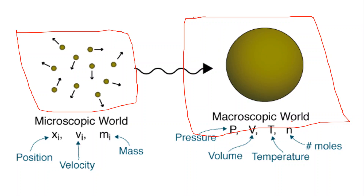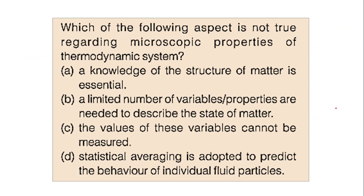We will solve one problem on microscopic and macroscopic systems. The problem is: which of the following is NOT true regarding microscopic properties? Option B is that a limited number of variables and properties are needed to describe the state of matter. Option C is that the value of these variables cannot be measured. Option D is that statistical averaging is adopted to predict the behavior of individual particles. Option A is true because we need knowledge of individual matter in a microscopic system.